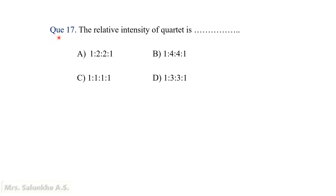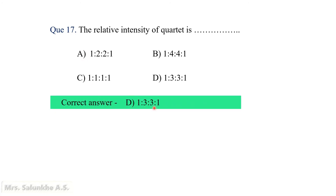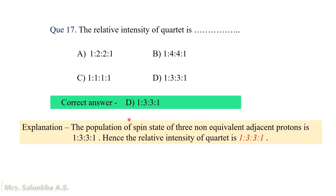Question 17: The relative intensity of a quartet is — what? A quartet is obtained when there are 3 non-equivalent adjacent protons. The population of spin states of those 3 non-equivalent adjacent protons gives relative intensities of 1:3:3:1. Therefore, the relative intensity of a quartet is 1, 3, 3, 1.